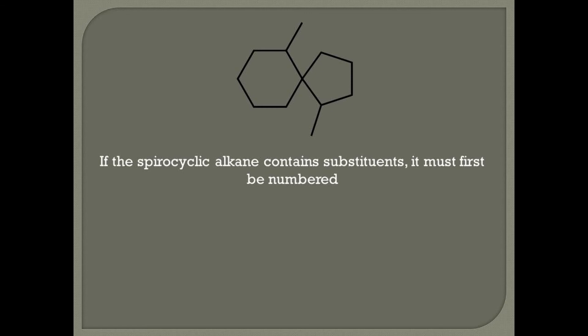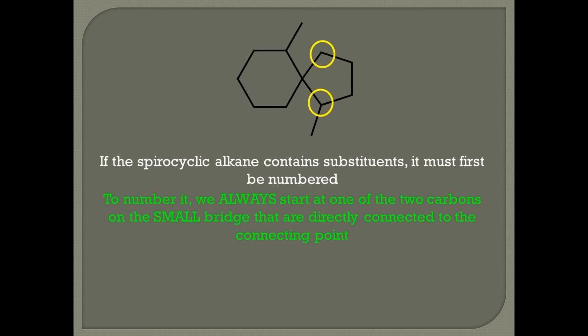Rule two: if the spirocyclic alkane contains substituents, it must first be numbered. To number the spirocyclic alkane, we always start at one of the two carbon atoms on the small bridge that are directly attached to the connecting point. These two carbon atoms are the ones shown inside the yellow circles in my diagram.